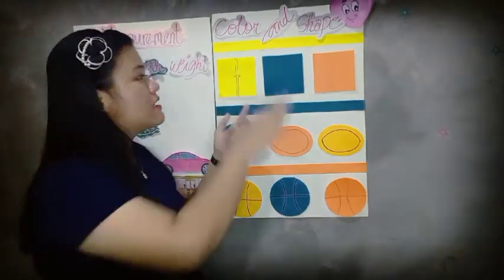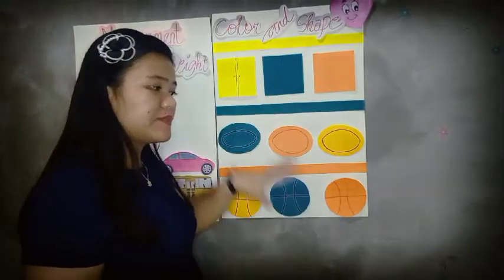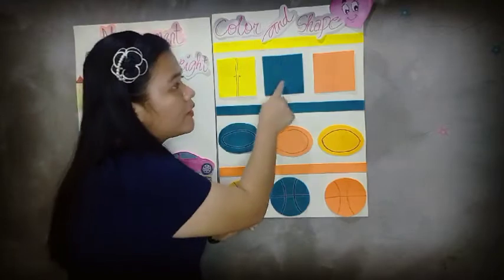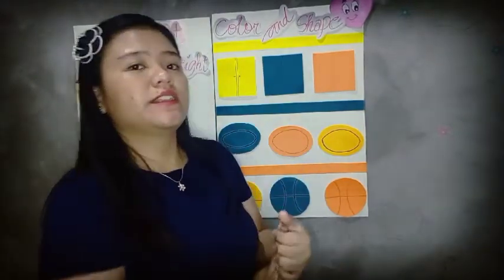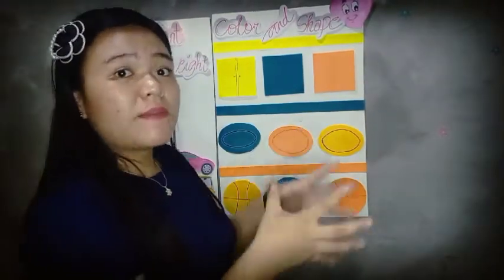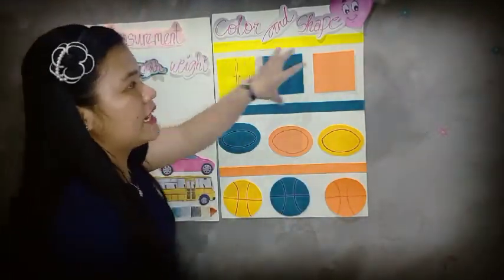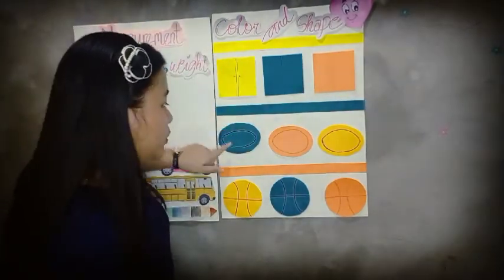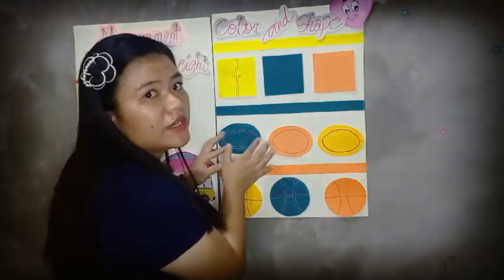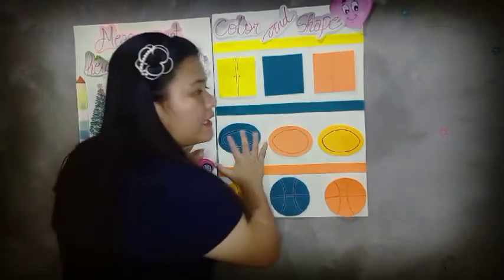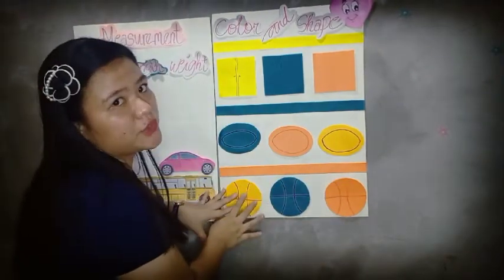Starting with our first object, the window, we will sort the colors of all three different objects. We have three colors: yellow, blue, and orange. The yellow objects go in the first room of our attributes wall, the blue objects in the second room, and the orange objects in the third room. We take the yellow plate and move it to the first room, and the blue plate goes to the second room.